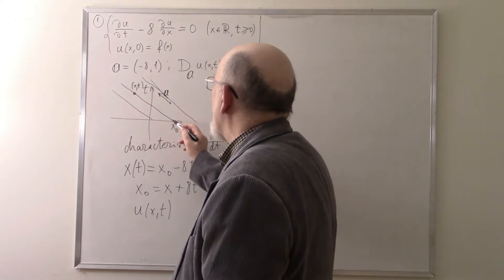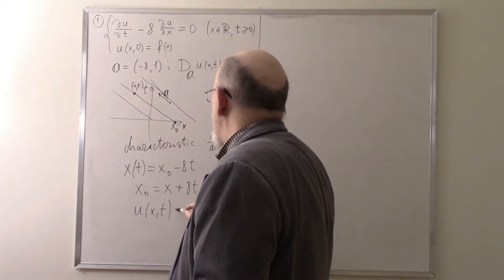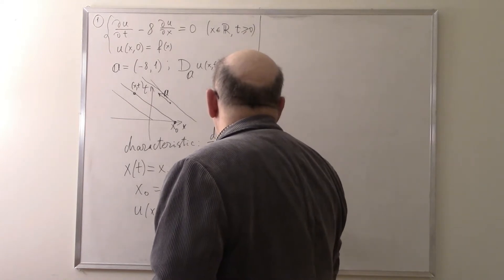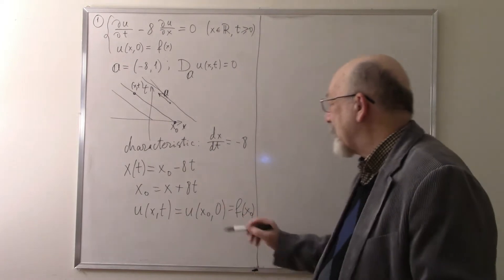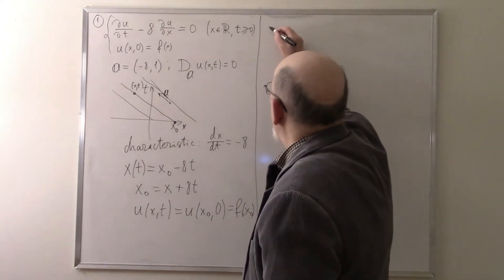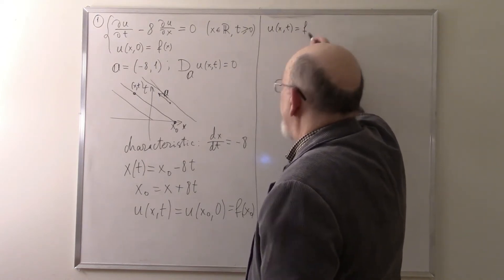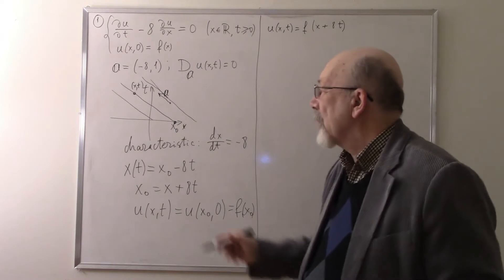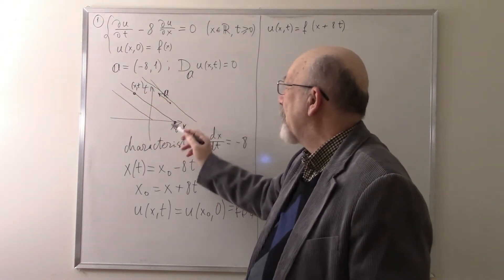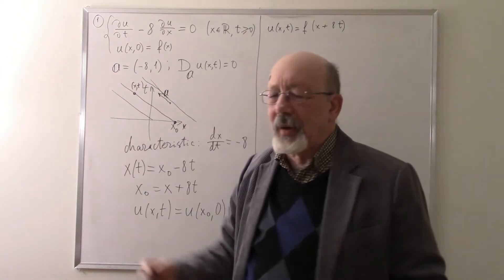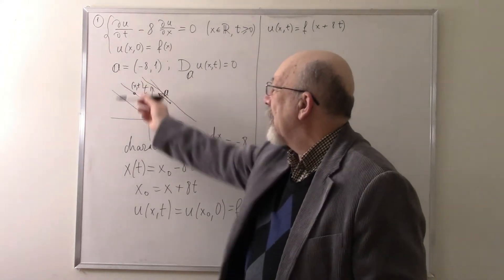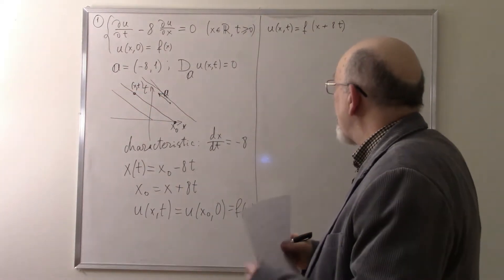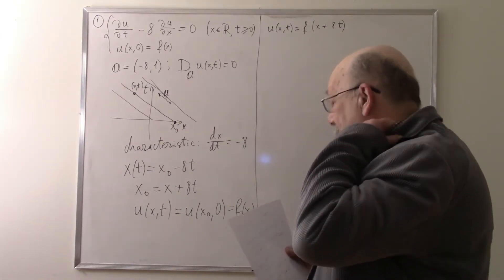Since u is constant along a characteristic, u(x, t) equals u(x₀, 0) equals f(x₀), where x₀ equals x plus a·t. So the solution is u(x, t) equals f(x plus a·t). The initial condition is transported along the characteristic — this is the simplest equation.